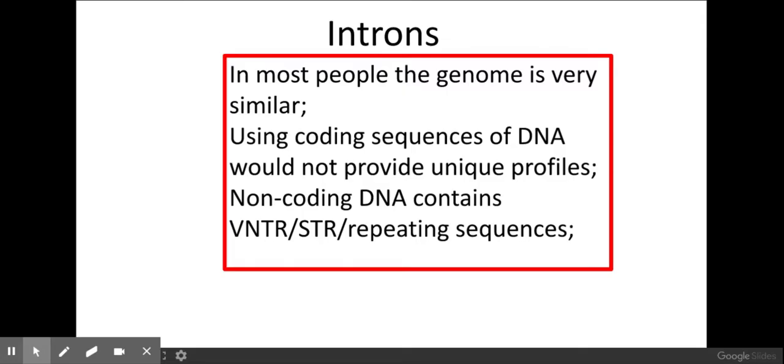So if I was to use the exons, this is what this first point is getting at here. In most people the genome is very similar. In most people the coding DNA, the exons, are quite similar. So therefore using coding sequences of DNA would not provide us with unique profiles.